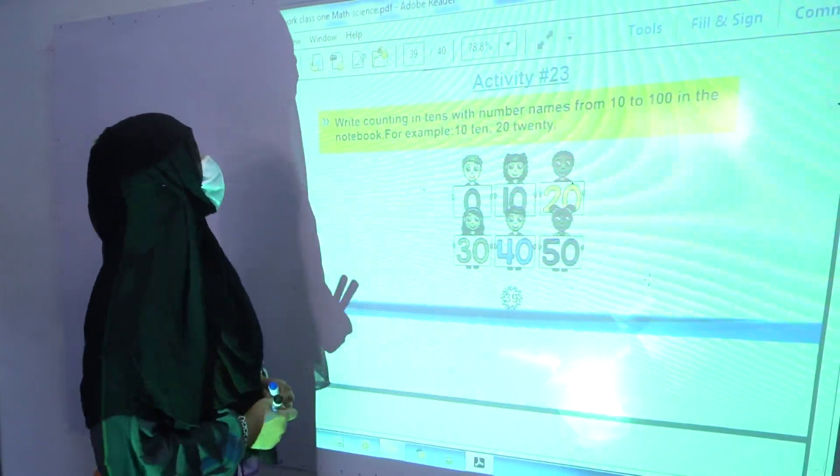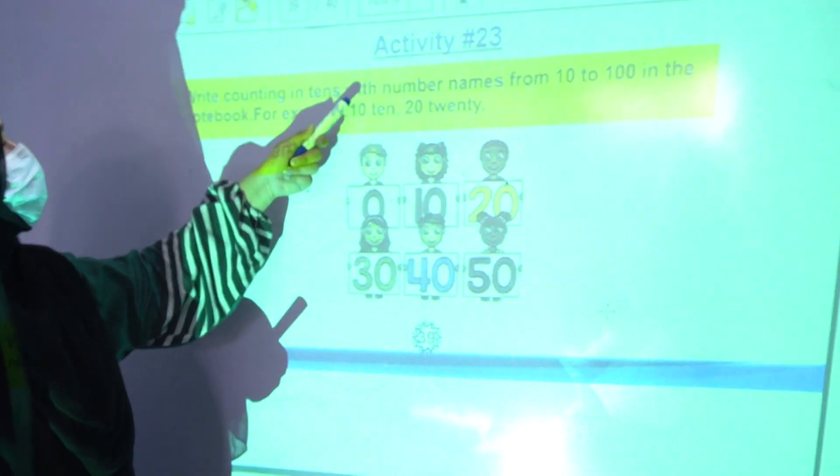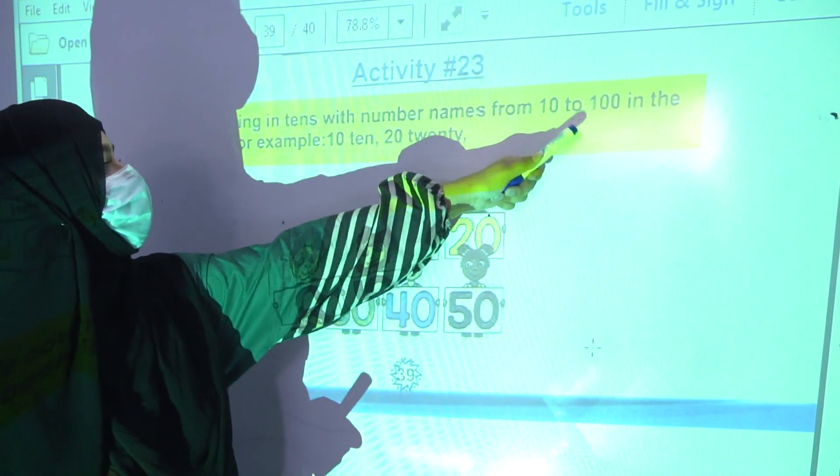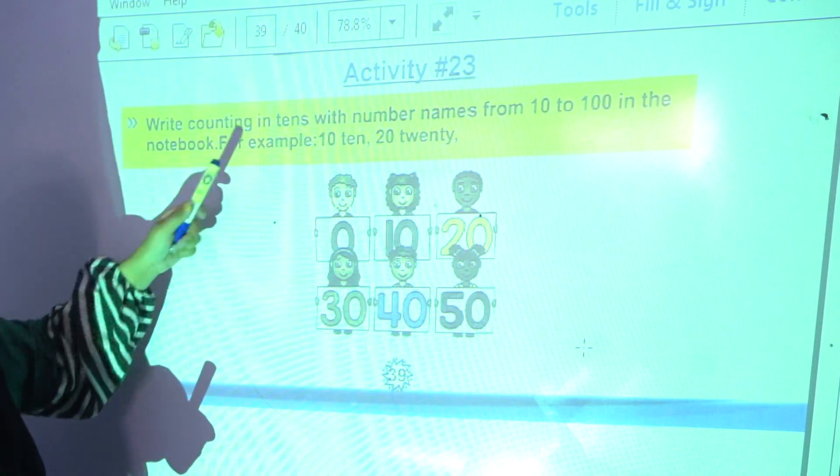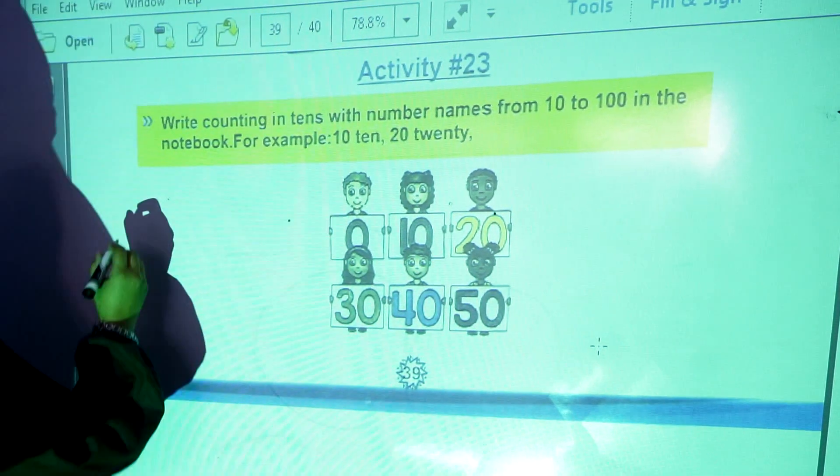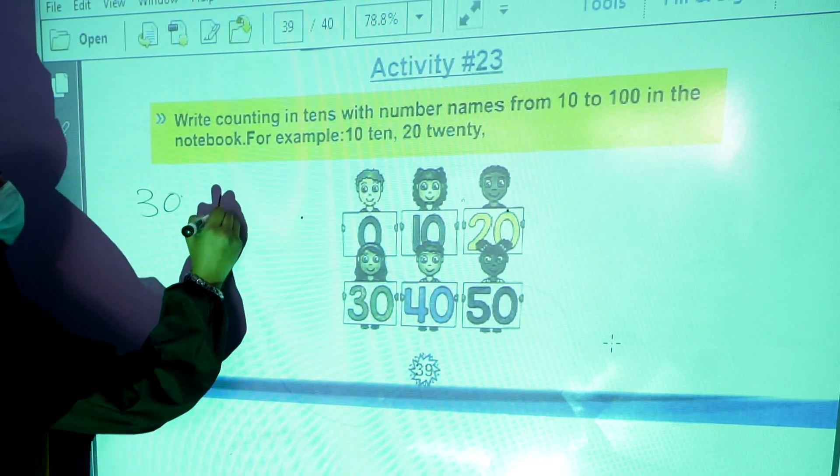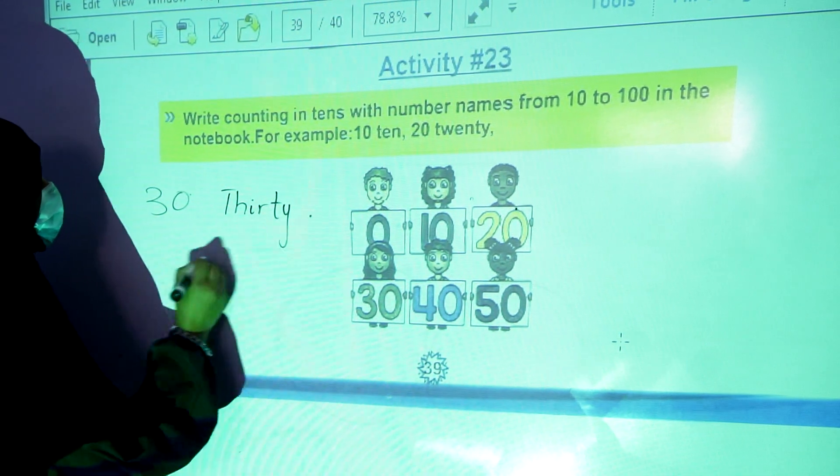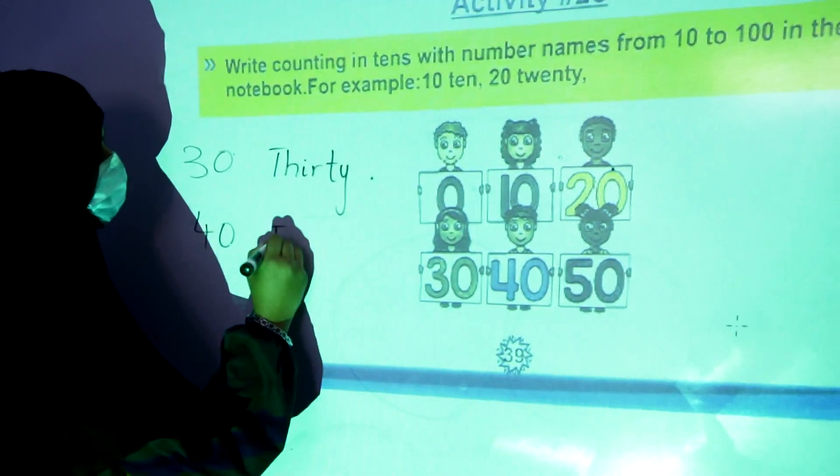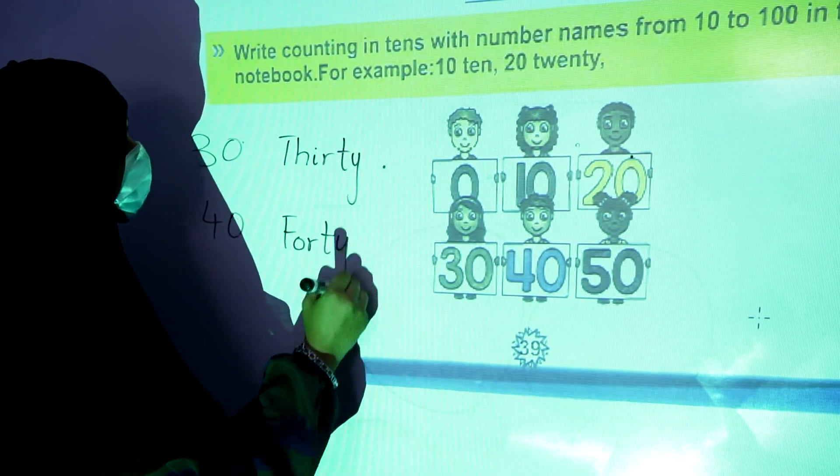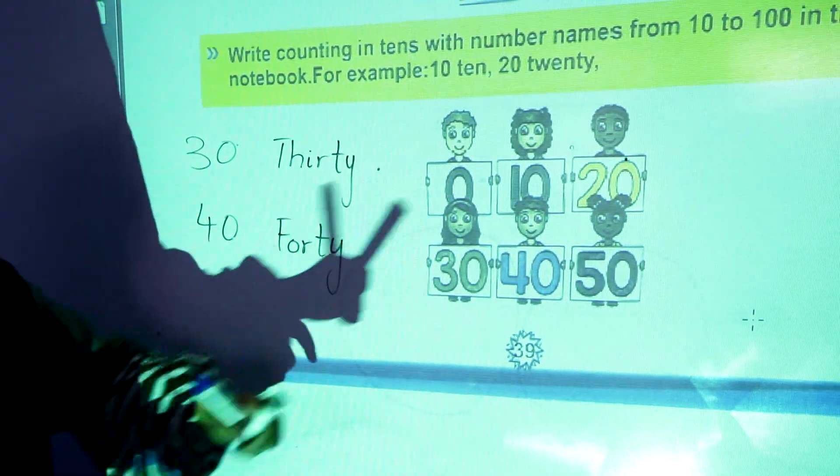Now activity number 23, write counting in tens with number names from 10 to 100 in your notebook. For example, 10, 20, 30, T-H-I-R-T-Y, thirty. 40, F-O-R-T-Y, forty. In this way, you have to write it till 100.